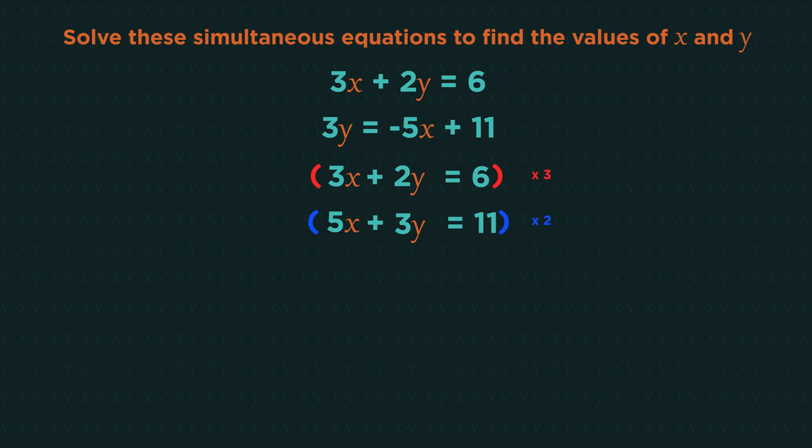Maybe you wanted to match up your x's instead. So you could have multiplied the top equation all by 5 and the bottom equation all by 3. It makes no difference. You'll still get the same answers. So back to having 6y in both.